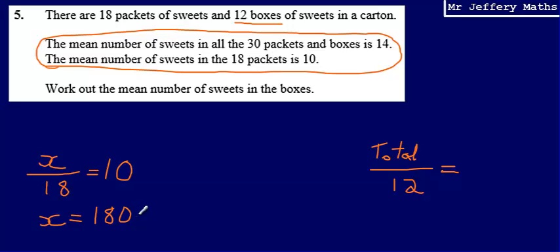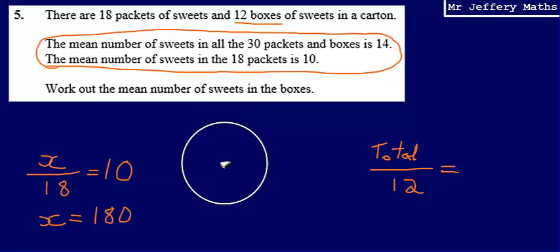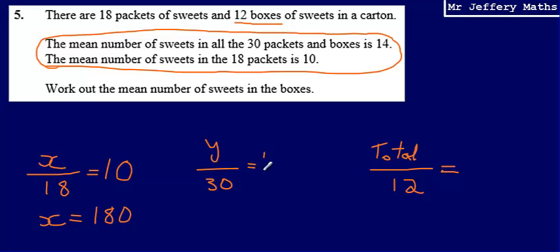Now I need to figure out: if I know the sweets in the packets, and I know the mean for the packets and boxes combined, I can find the total sweets in the boxes. I know that the total of packets and boxes divided by 30 — using a different letter Y to signify a different equation — gives 14. So Y divided by 30 equals 14, meaning the total number of sweets is 30 times 14, which gives 420.